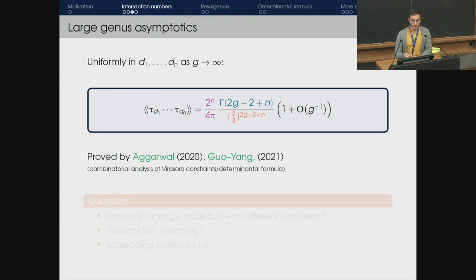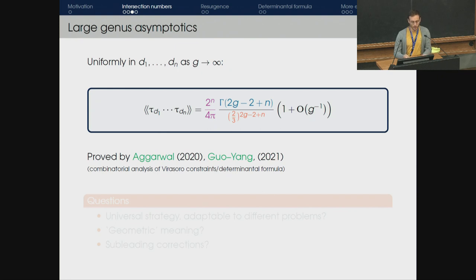A natural question is: what about the asymptotic formula for these numbers? I focus on the large genus asymptotic formula. The answer is a closed-form expression with three building blocks: a constant term 2^n over 4π, a factorial term Γ(2g−2+n), and a power factor (2/3)^(2g−2+n). The proof was given by Aggarwal in 2020, with a second proof in 2021, both using combinatorial analysis of Virasoro constraints and determinantal formulas.